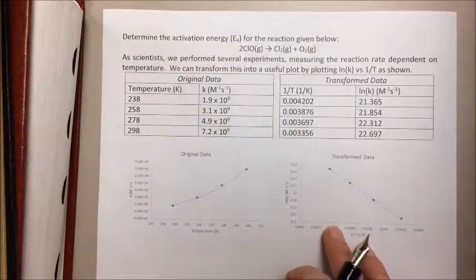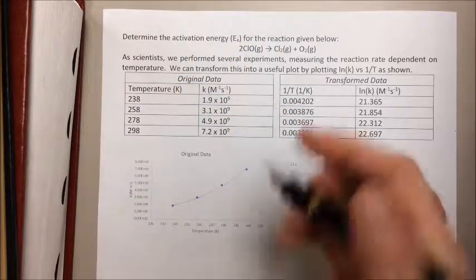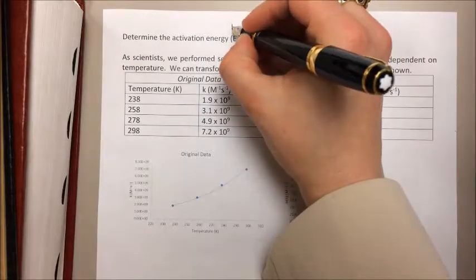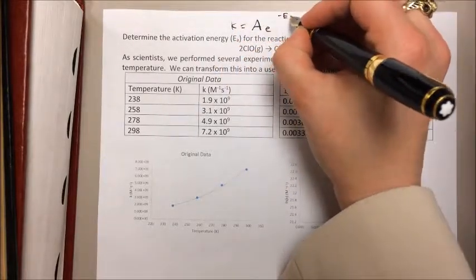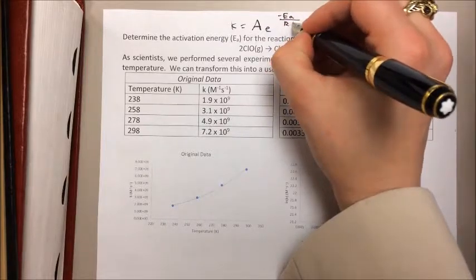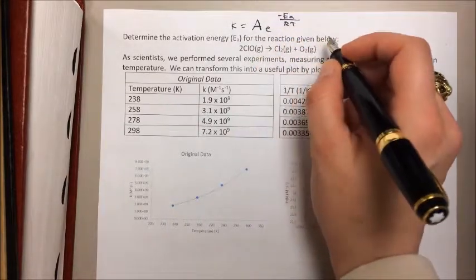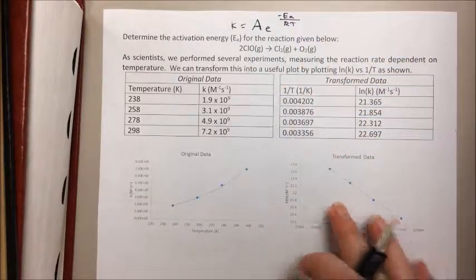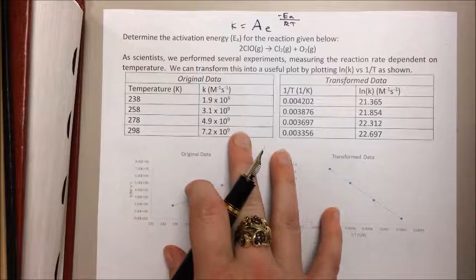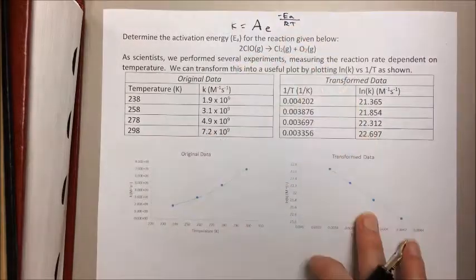Remember that the Arrhenius equation states that the rate equals A times e to the power of negative Ea over RT. So if we take the natural log of both sides and rearrange things around, we get a relationship that we can use with temperature and rate data in order to get that activation energy.